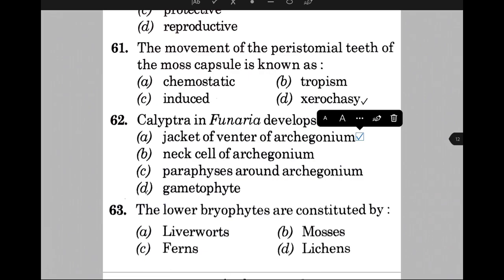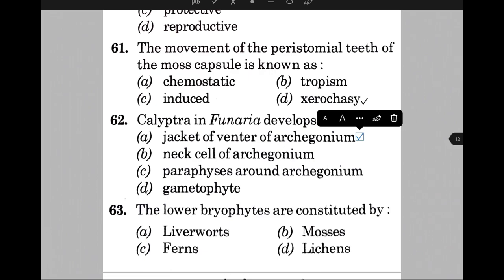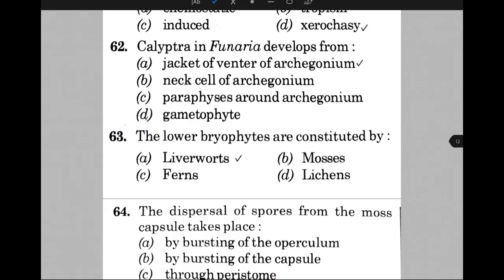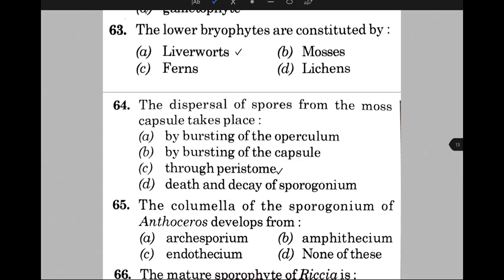The lower bryophytes are constituted by — the answer is A, that is liverworts. The dispersal of spores from the moss capsule takes place by — the answer is C, that is through the peristome. The columella of the sporogonium of Anthoceros develops from — the answer is C, that is endothecium.